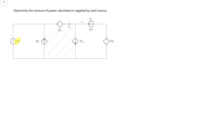We have a dependent voltage source, a dependent current source, a current source controlled by voltage, a current source controlled by current, a voltage source controlled by voltage, and a voltage source controlled by current. So we can have four types of dependent sources, and we have all of them here.